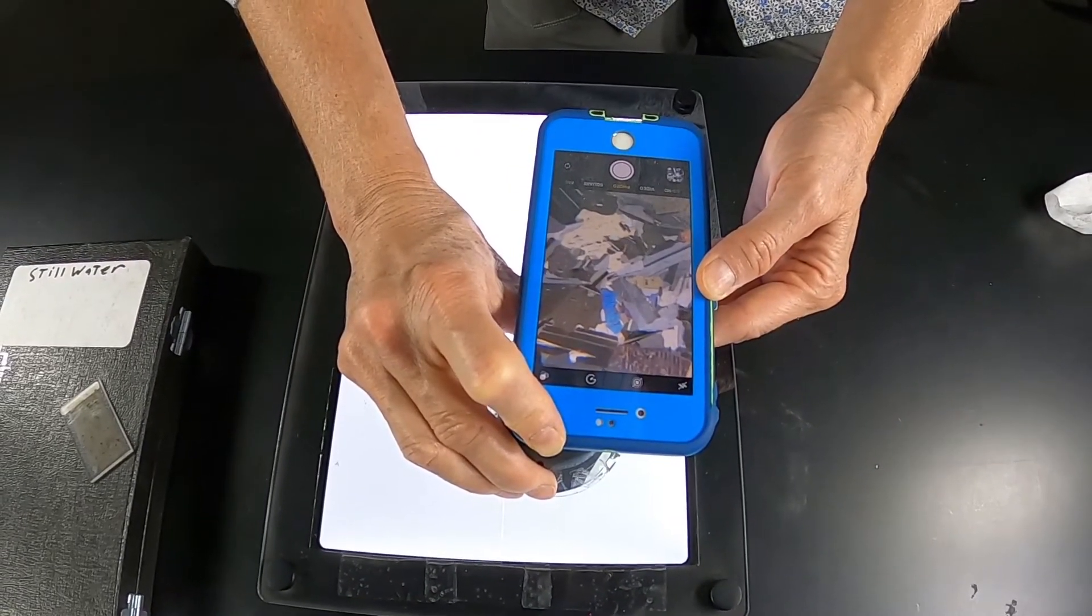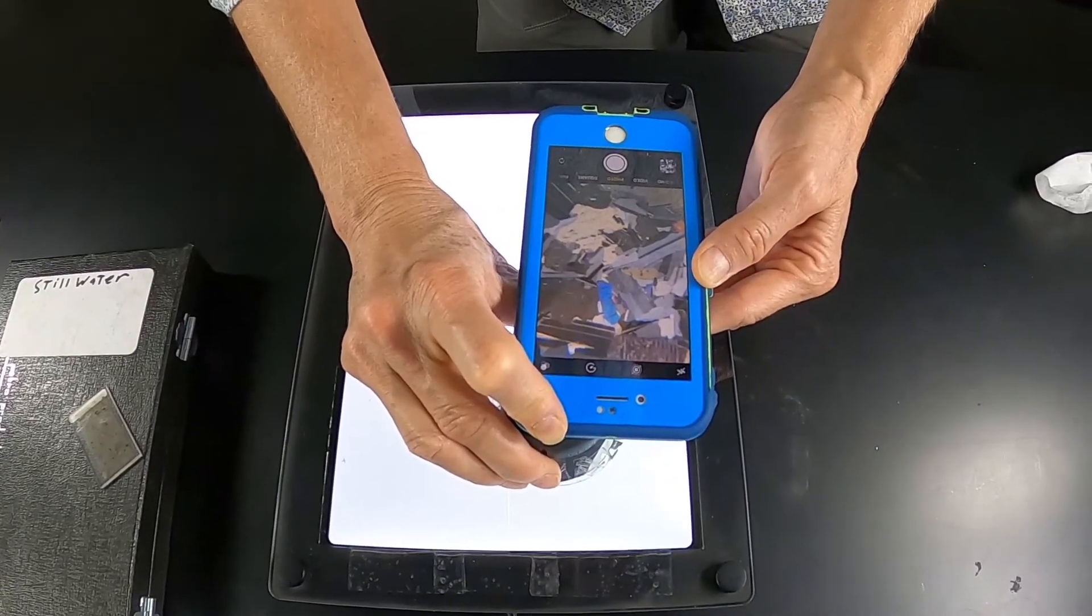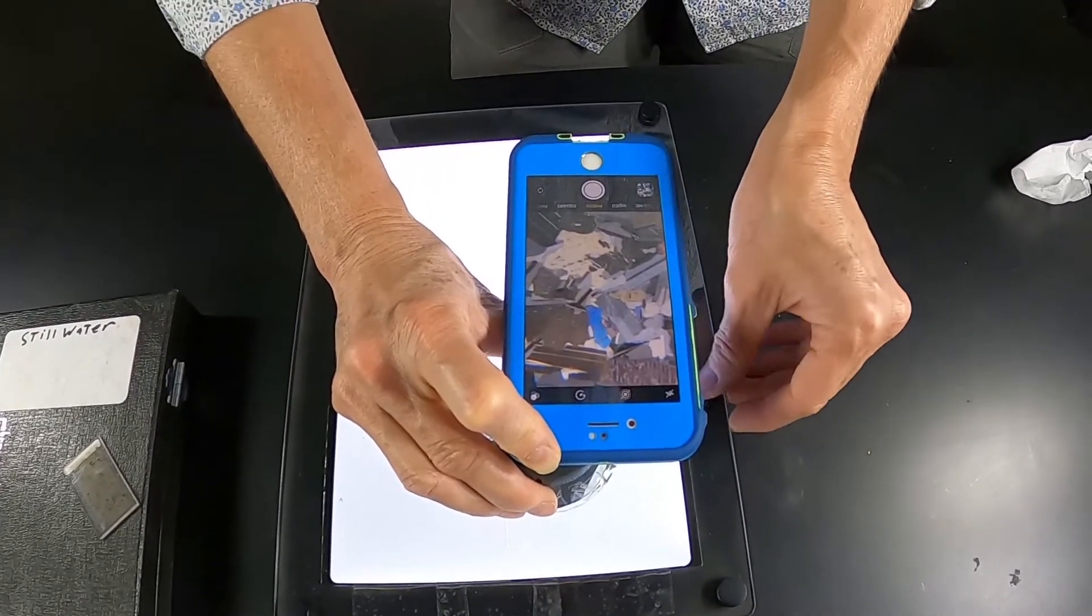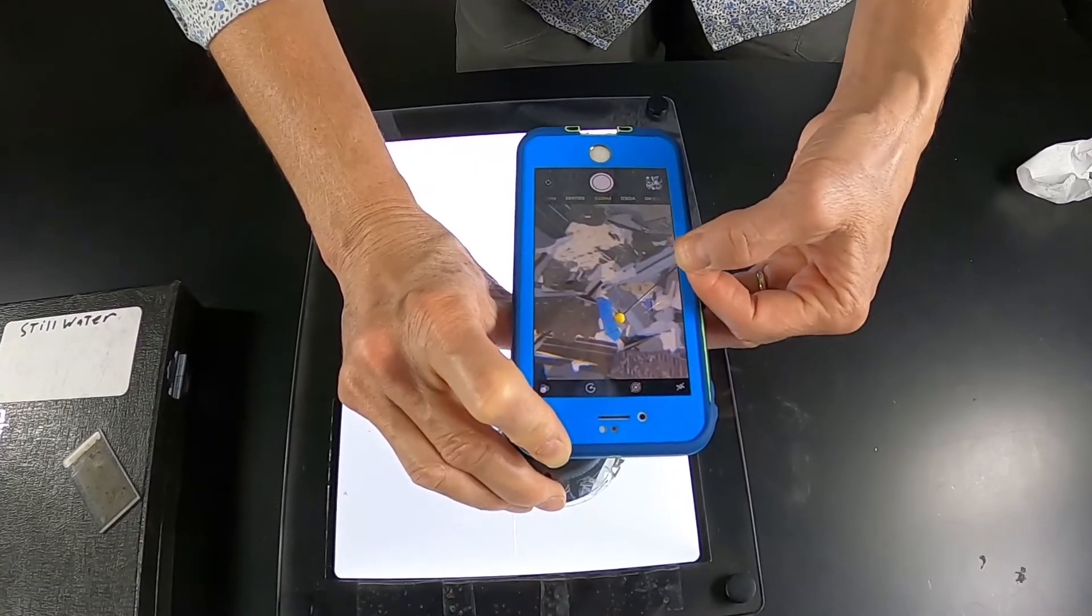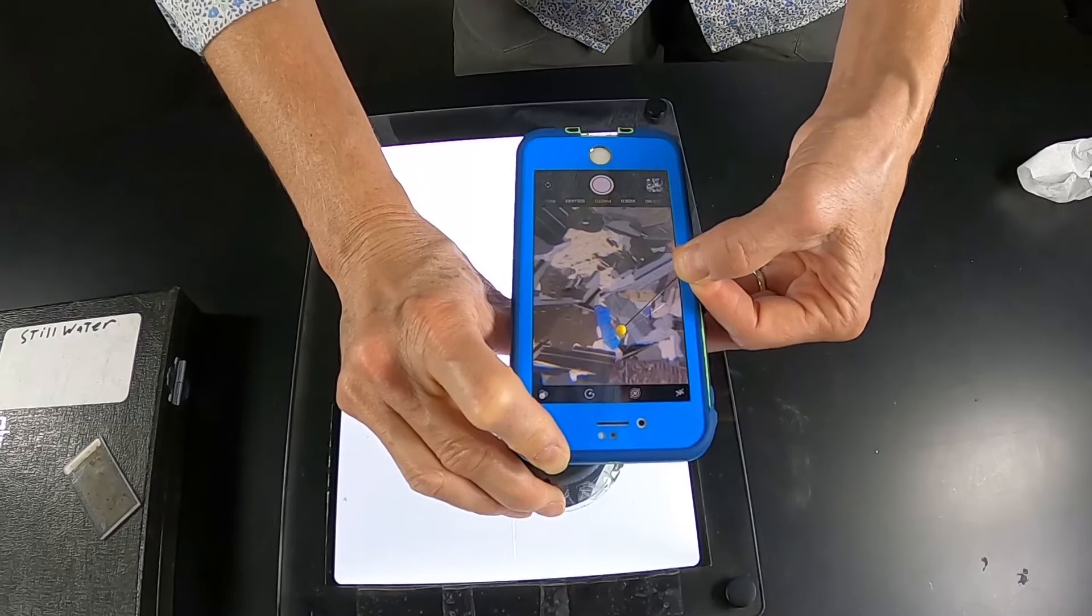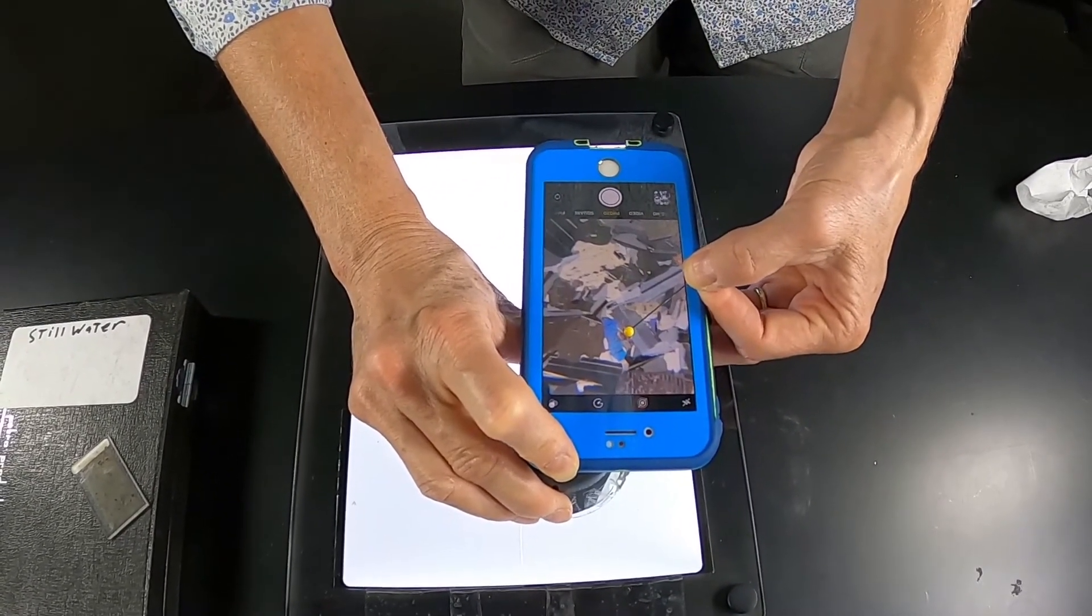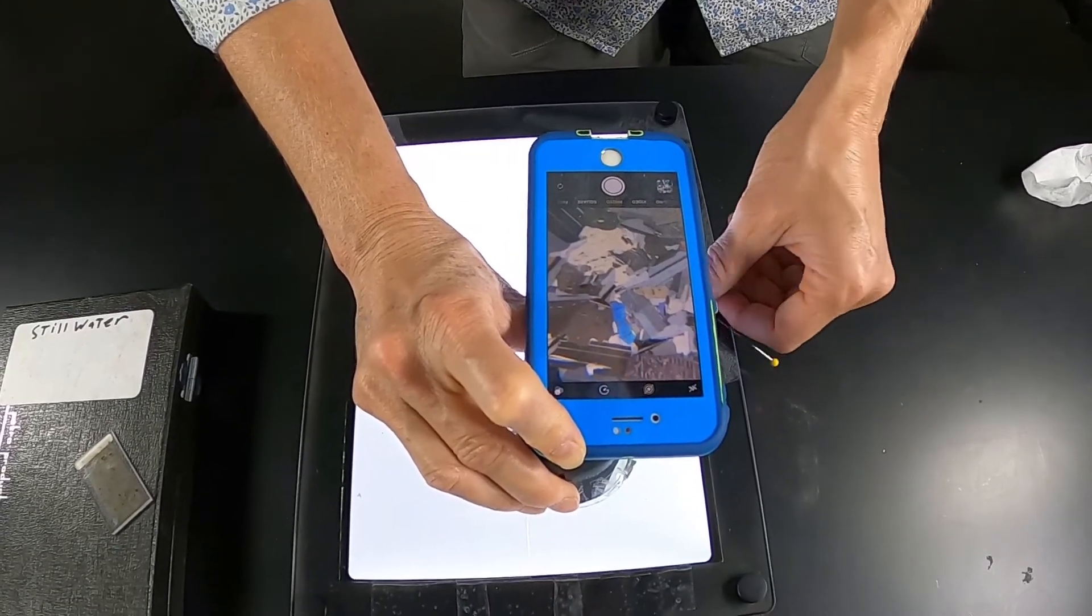These bars within the host clinopyroxene are a different pyroxene that has exsolved. And we're going to take a look at how this comes to be.